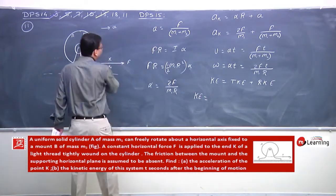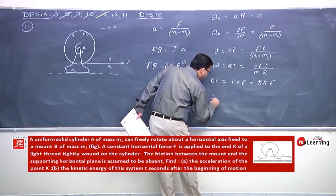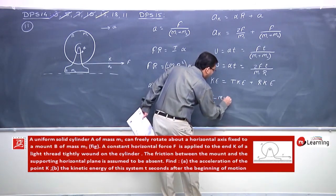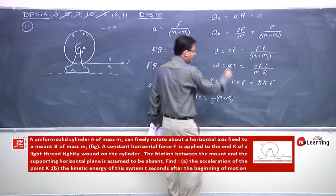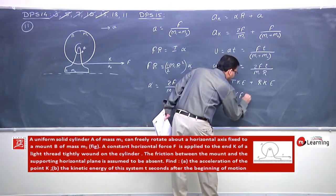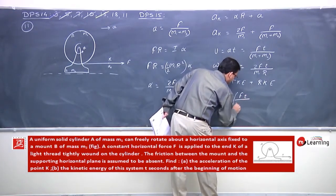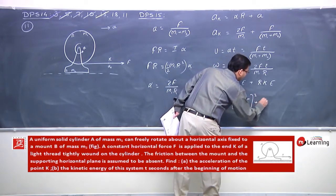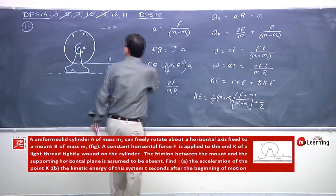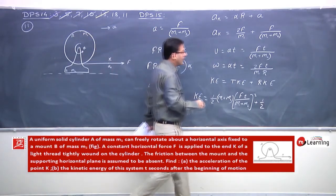Translational kinetic energy of the entire system will be half M1 plus M2 times velocity squared. Velocity is F T by M1 plus M2 whole squared, plus rotational kinetic energy.